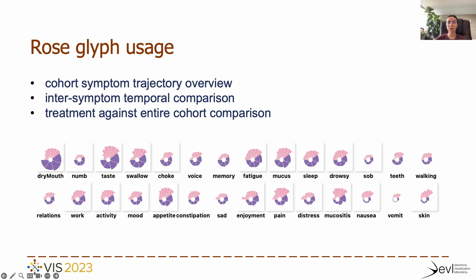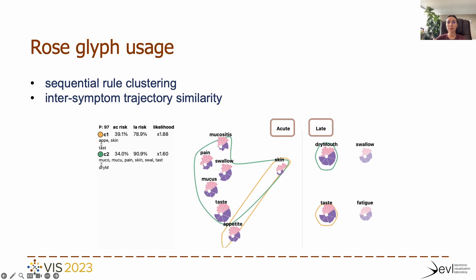The rose glyph has several usages within the interface. First, it provides an anchoring point for all treatment plans by showing mean symptom ratings over time for the entire patient cohort and facilitating inter-symptom comparison. In this example, dry mouth, taste, and swallow show higher ratings than other symptoms and have similar trajectories. Second, it is used to illustrate the rose clusters produced by the sequential rule mining. The clusters are separated horizontally into the acute and late stages, with each cluster highlighted using a categorical color-encoded envelope. The 2D projection in the acute denotes symptom similarity, while the rose glyphs capture temporal severity. Here we can see that the two existing symptom clusters share skin as a common symptom, and that each cluster has a different symptom predicted in late, namely dry mouth and taste.